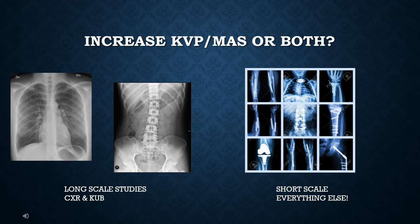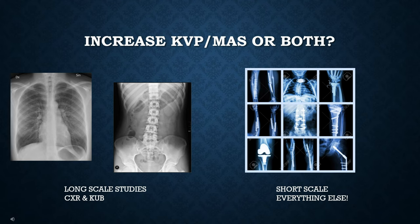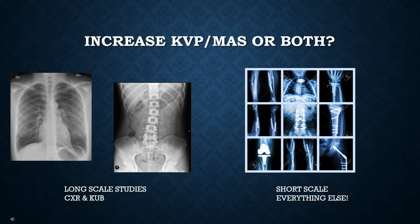Increasing mAs as a tech is probably a little easier. But if it's a short-scale study, mAs is the key to increase. For long-scale — chest X-ray or KUB — increase the KVP. And on the registry, the answer is always to increase KVP because it results in lower patient dose. However, you can't use 110 or 120 KVP on everything — too much KVP will penetrate right through the patient, hit the detector with incorrect attenuation, causing the image to be overpenetrated, saturated, and result in a permanent loss of contrast.